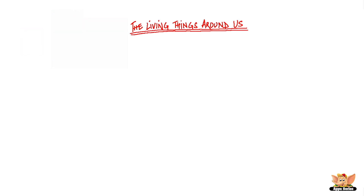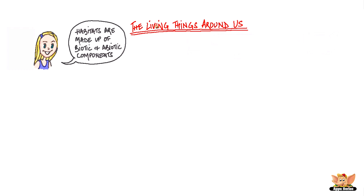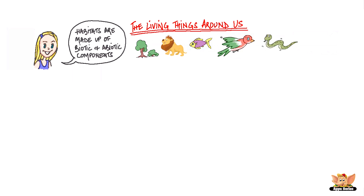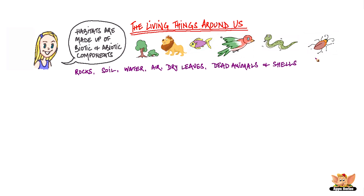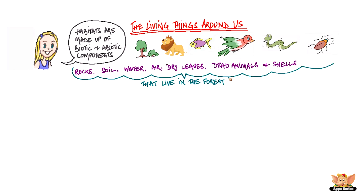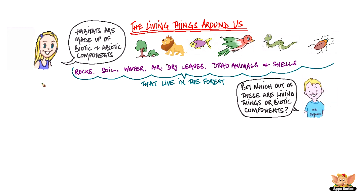In this video we are going to talk about the living things around us. We have learned in our previous videos that habitats are made of biotic and abiotic components. Trees, shrubs, terrestrial animals, aquatic animals, birds, snakes, insects, rocks, soil, water, air, dry leaves, dead animals, and shells may be some of the objects that live in the forest. But which of these are living things or biotic components? Rocks, soil, water, and air are not alive.